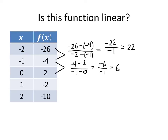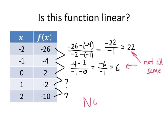Right away, we can tell that not all of these average rates of change are the same. We don't know what the average rate of change is for the remaining pairs of points, although we could figure it out. But we don't have to, because in order for this to be a linear function, all of the rates of change need to be the same. Since these first two are not the same, that means this function is not linear.